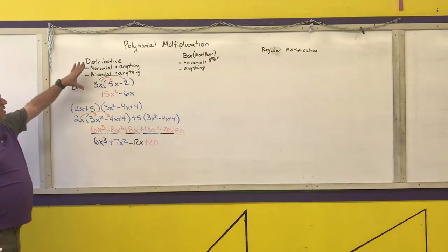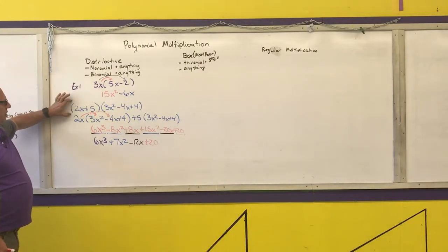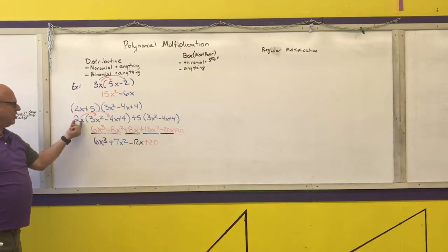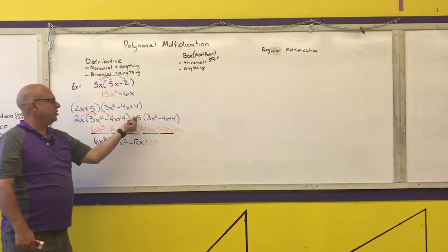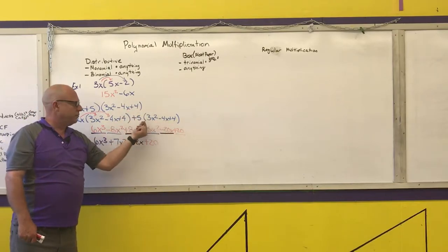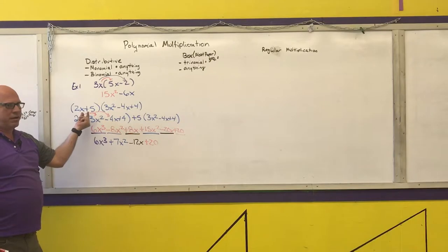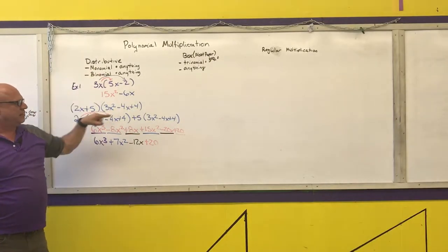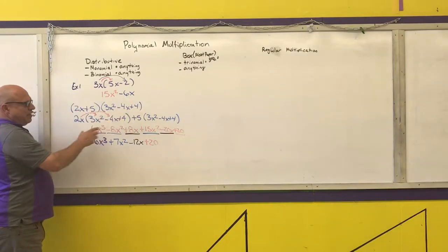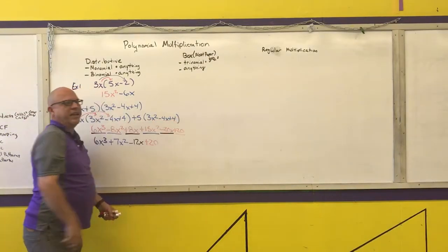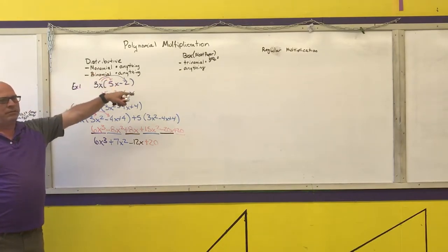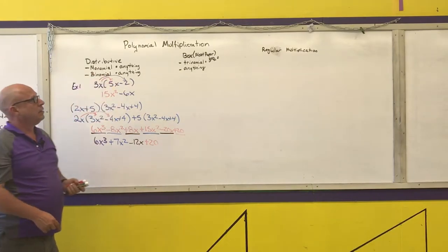For the distributive method of polynomial multiplication, you take the first polynomial and write it in front of the second polynomial for however many terms there are, then do the monomial-times-anything step. Once you get beyond a binomial times something, this becomes very, very long — that's why I don't recommend using it for anything more than a binomial times something.